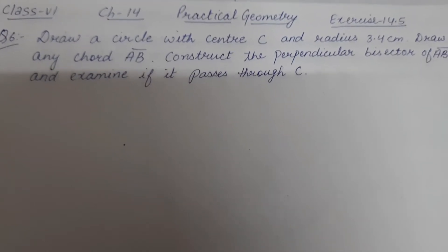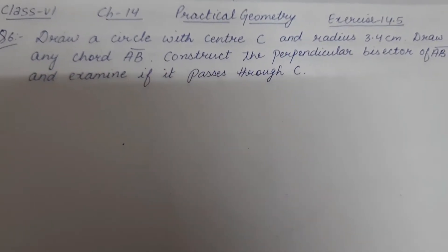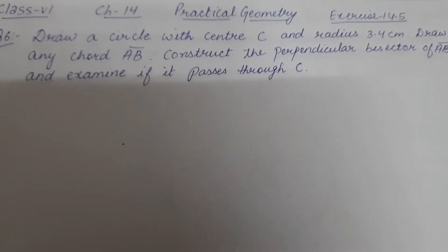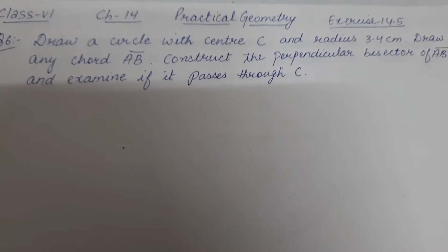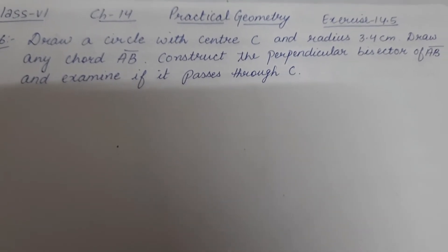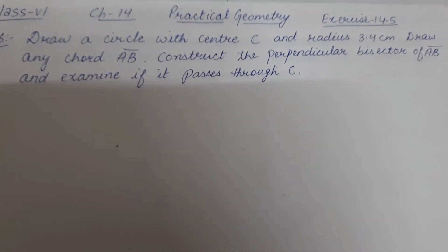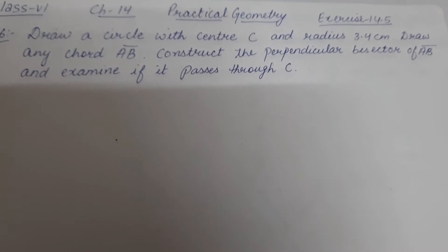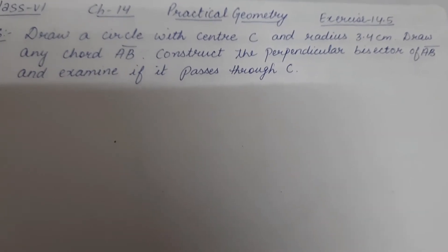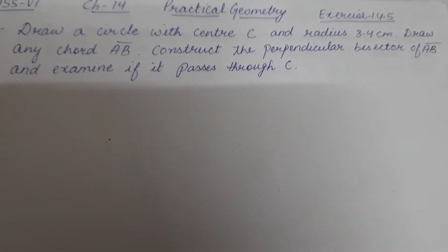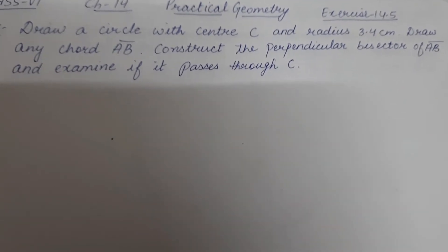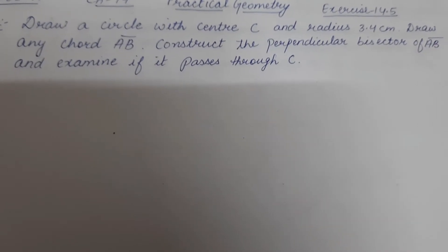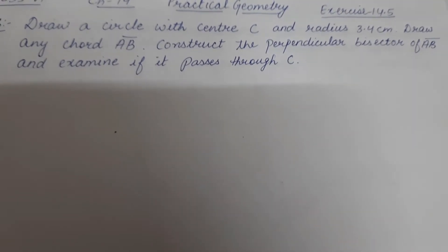Let's start question number six of Exercise 14.5. The question is: draw a circle with center C and radius 3.4 centimeters, draw any chord AB, construct the perpendicular bisector of AB, and examine if it passes through C.